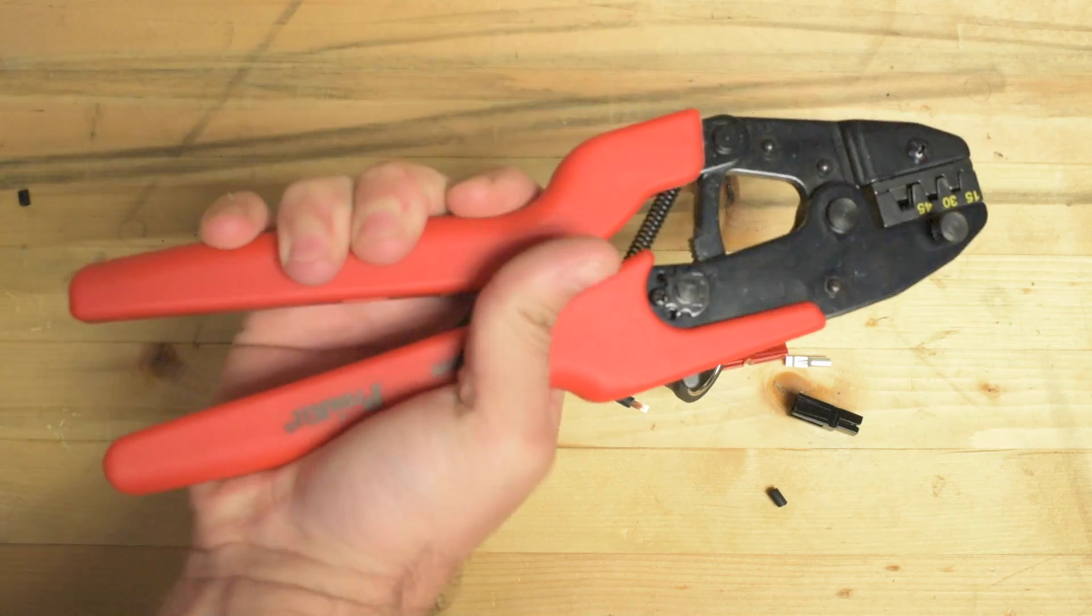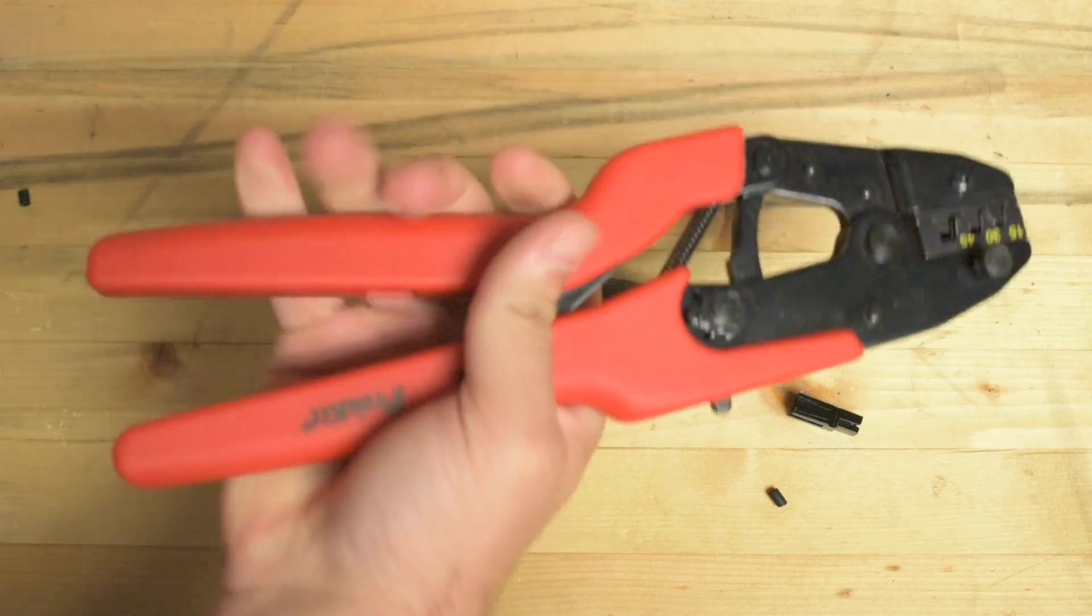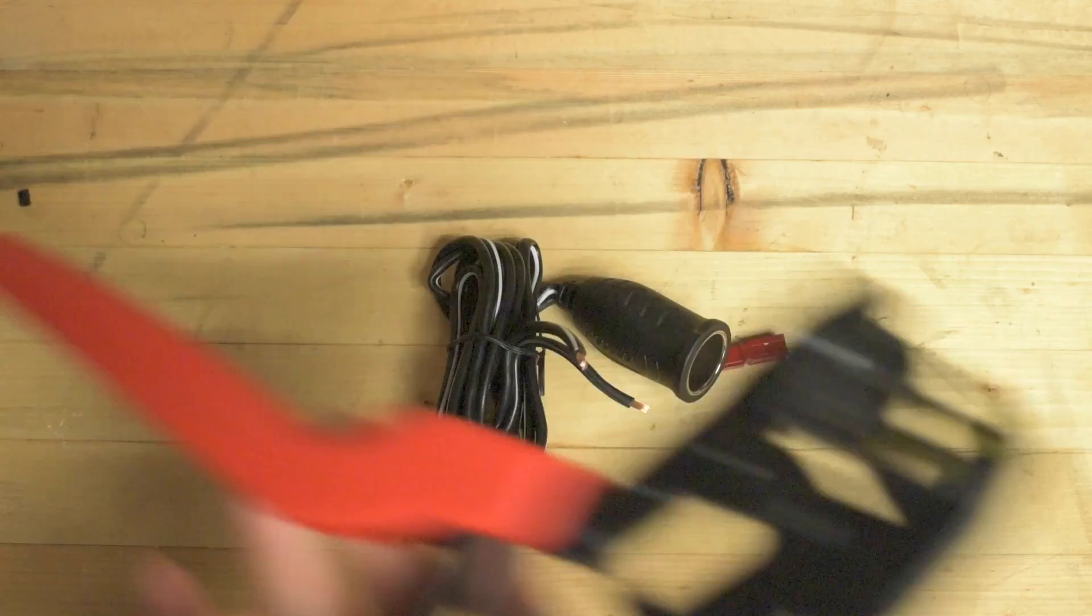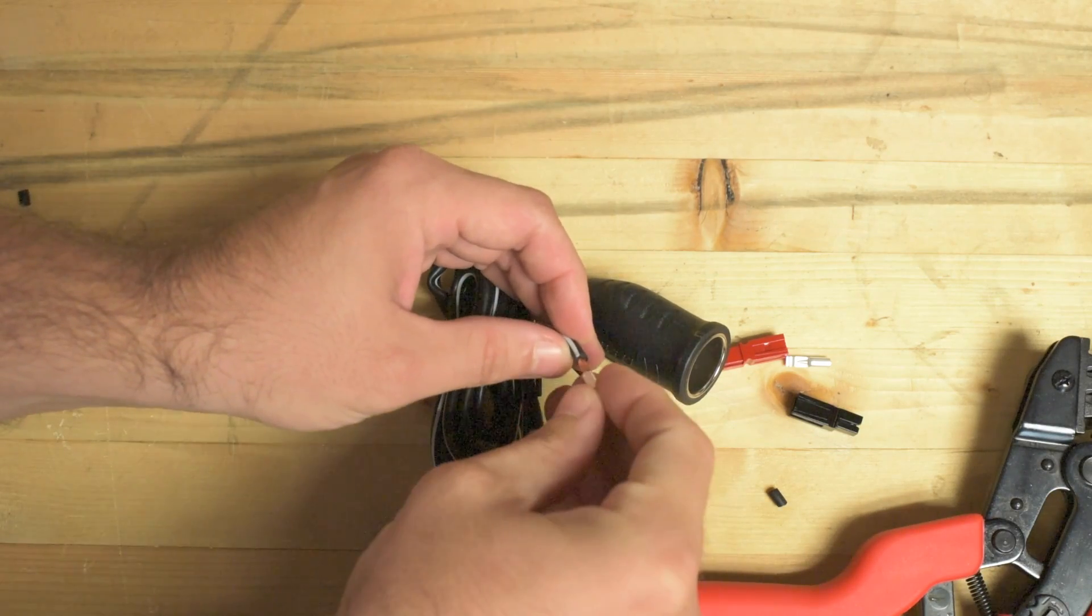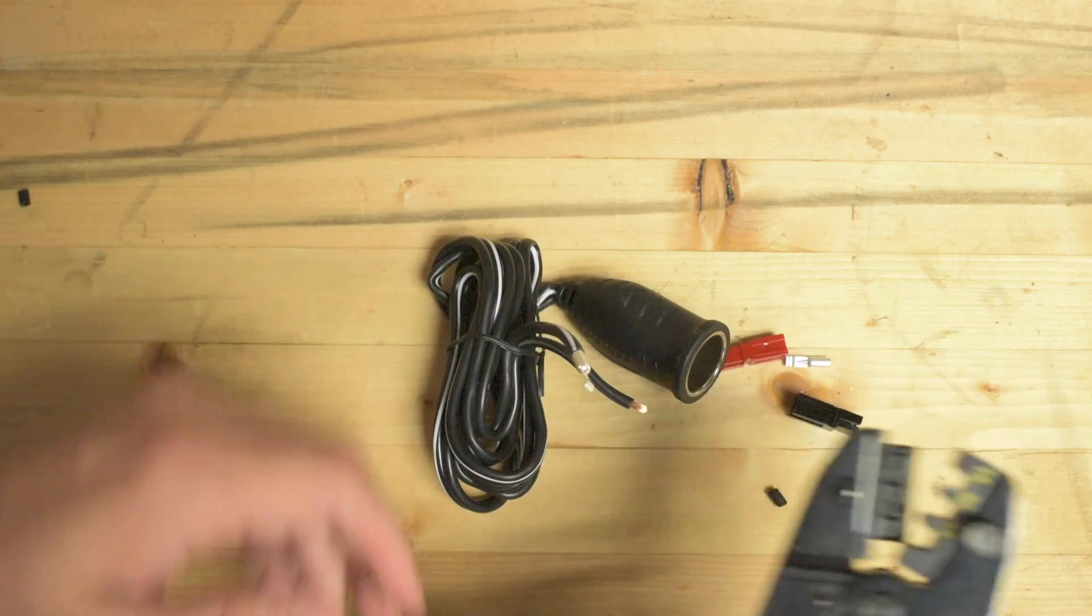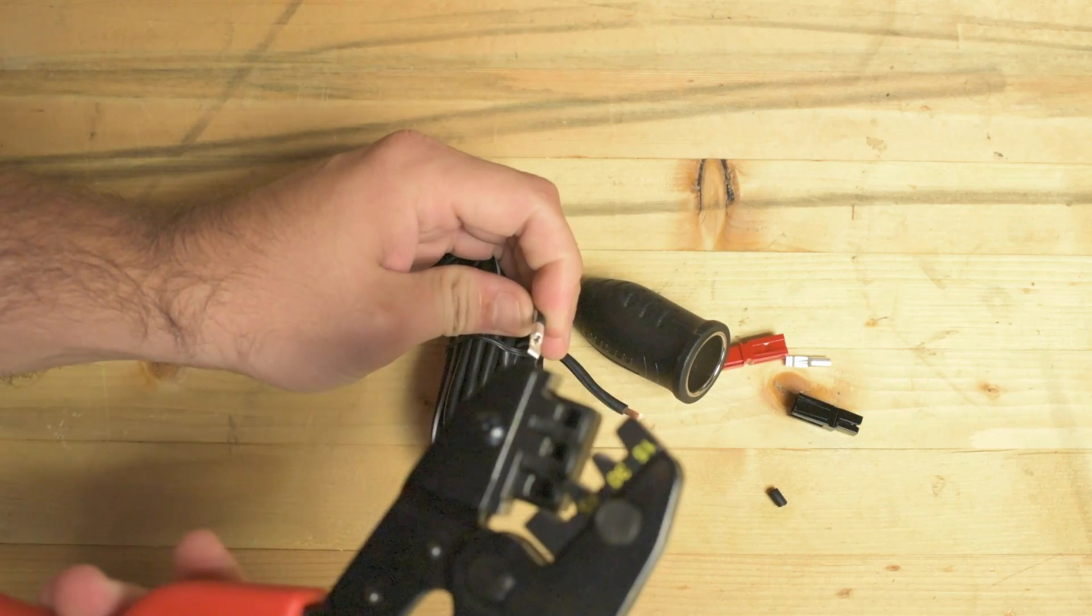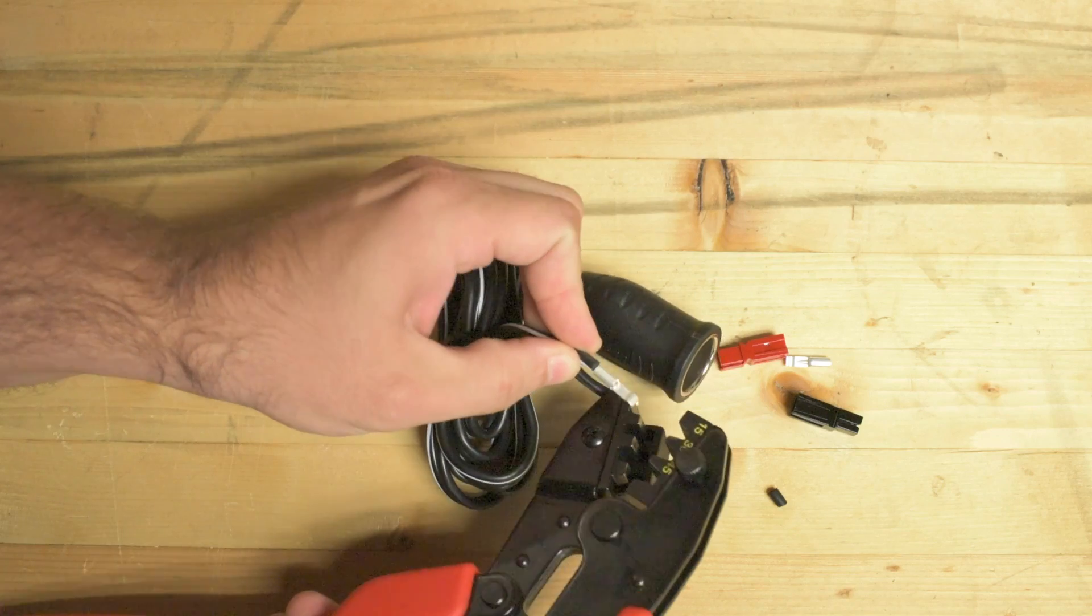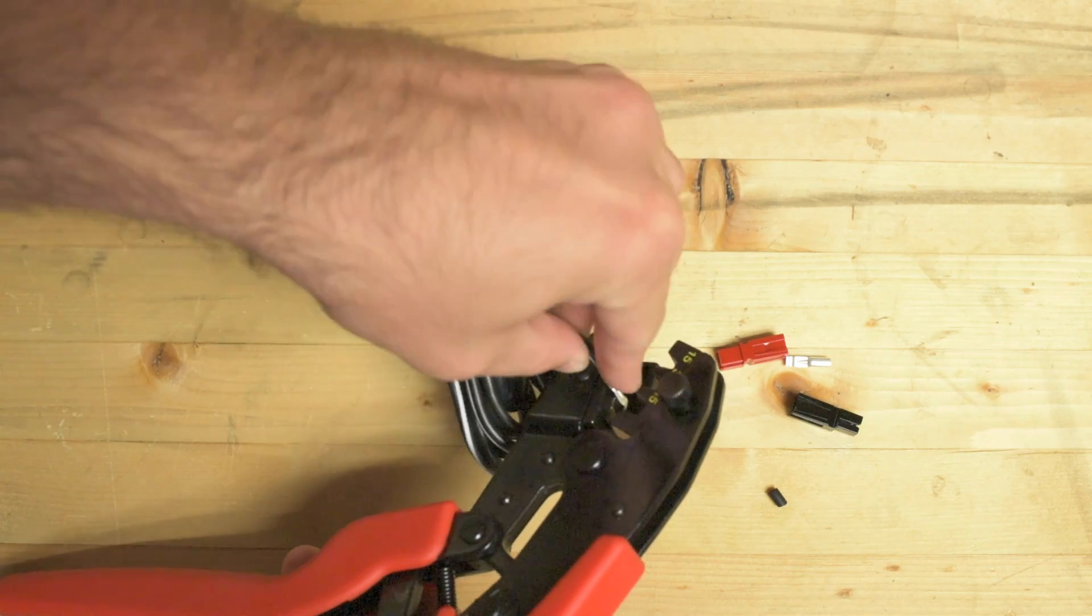So the way these work is they ratchet down, and then you squeeze them a little further and they release. So let's see. I'm really not sure how this works, but I think... let's try the 45 first.